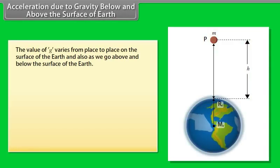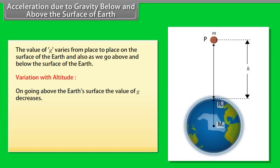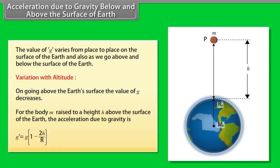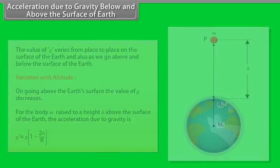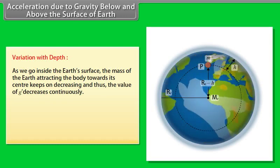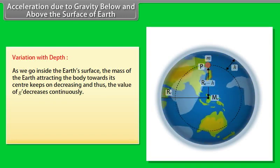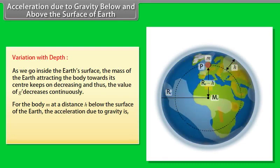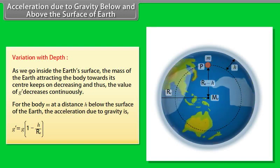Acceleration due to gravity below and above the surface of earth. The value of g varies from place to place on the surface of the earth and also as we go above and below the surface of the earth. Variation with altitude: On going above the earth's surface, the value of g decreases. The value of g decreases for the body m raised to a height h above the surface of the earth. The acceleration due to gravity is given by G dash is equal to G multiply by 1 minus 2h upon r. Variation with depth: As we go inside the earth's surface, the mass of the earth attracting the body towards its center keeps on decreasing and thus the value of g decreases continuously. For the body m at a distance h below the surface of the earth, the acceleration due to gravity is G dash is equal to G multiply by 1 minus 2h upon r e.